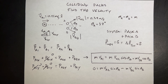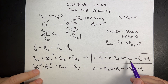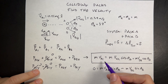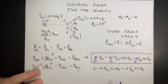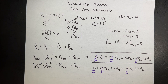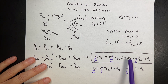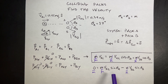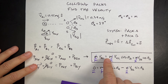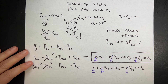You'll notice each term has a mass. Since both pucks have the same mass, I can divide both sides by M and it cancels throughout both equations. Now I have two equations and two unknowns: I don't know θB and I don't know VB2, but I know everything else. With two equations and two unknowns, I'll solve one equation for a variable and plug it into the other.